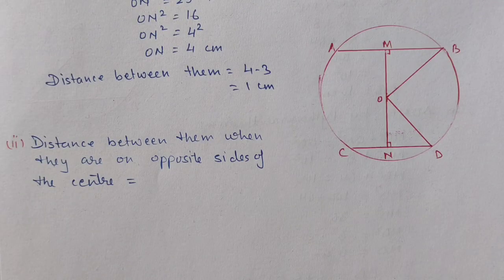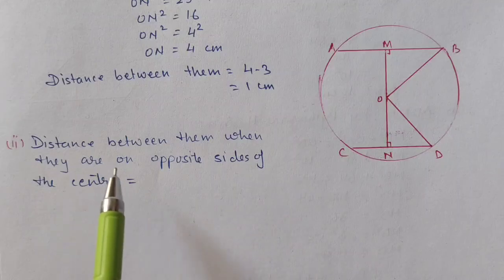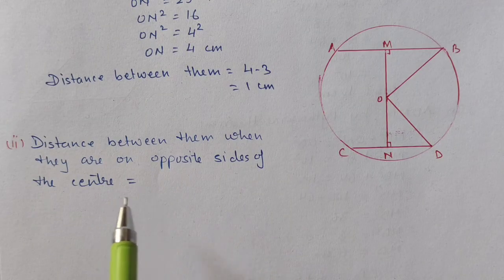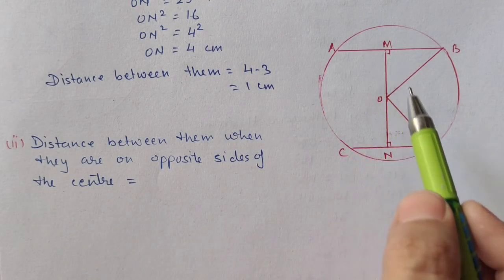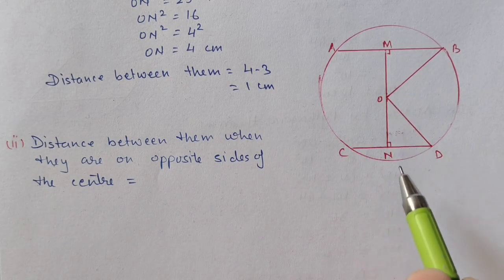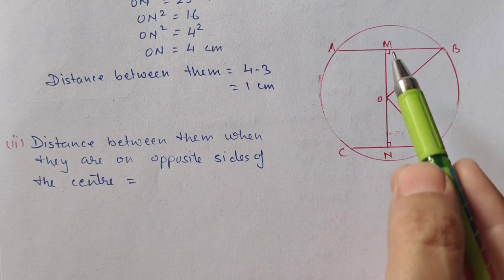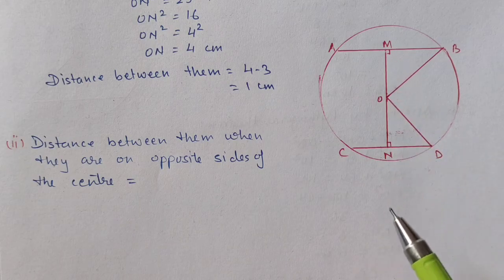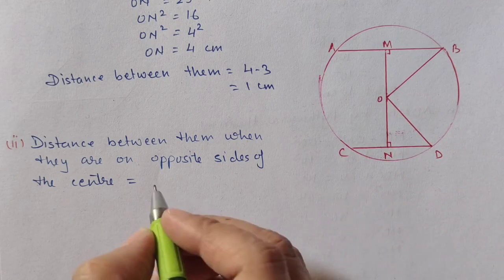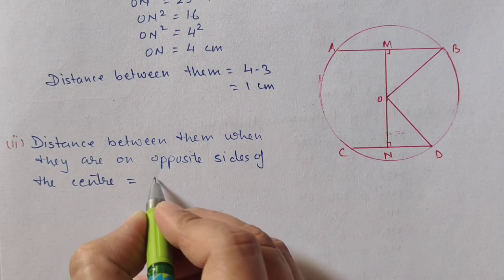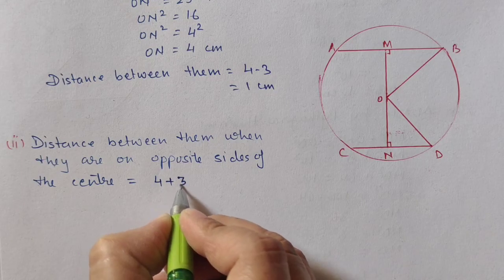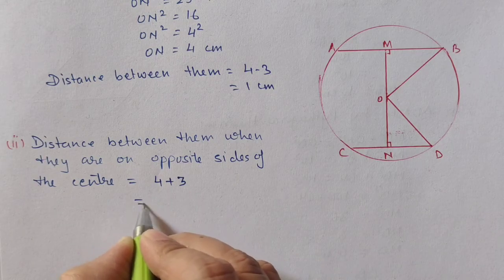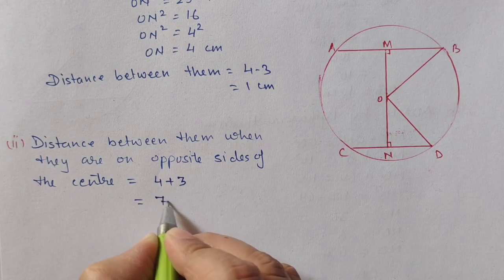In the second case, when the chords are on opposite sides of the center, the distance between them is MO + ON = 3 + 4 = 7 cm.